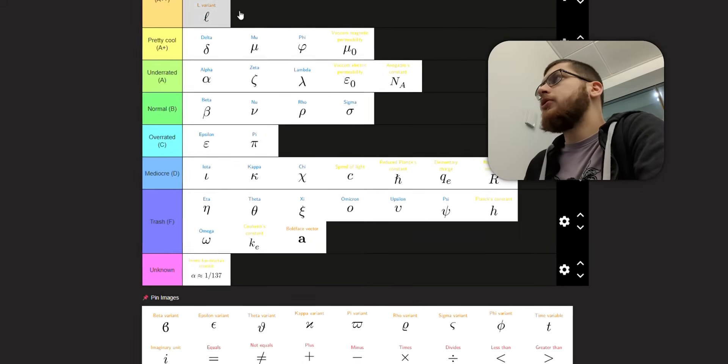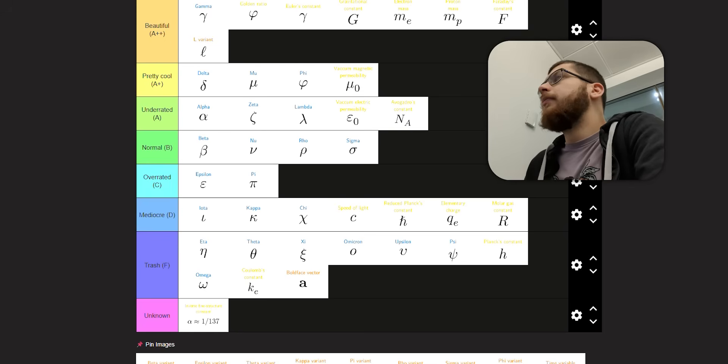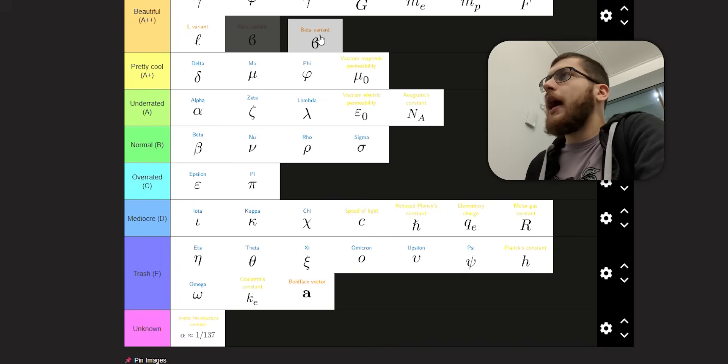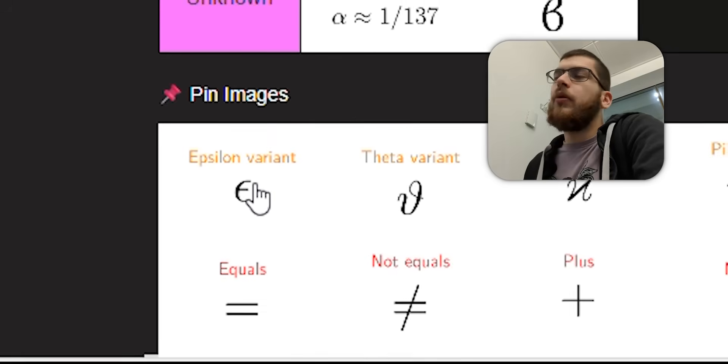L variant. What else letter would you use? Use a curly L. And a curly L is nice. So I'll put it in beautiful. Beta variant. I think this is kind of beautiful. Easy to write. I don't really know what it's used for. So I guess I'll put it in unknown. But I would put it in A tier.